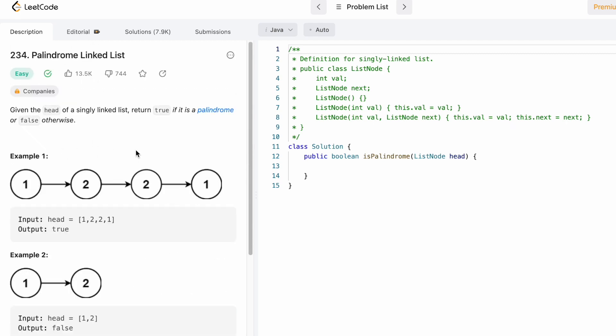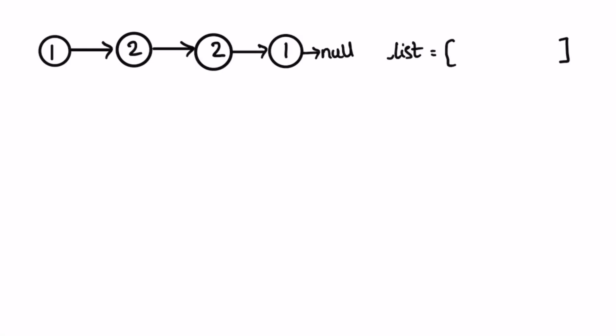Now let's take a look at this example and see how this can be solved. The head of the linked list points to nodes [1, 2, 2, 1] with the last node pointing to null. I've created a list so we can add these nodes as integers and then check for palindrome. I create a node called current and point it to the head, then access each node going to the end of the linked list, adding one node at a time into the list.